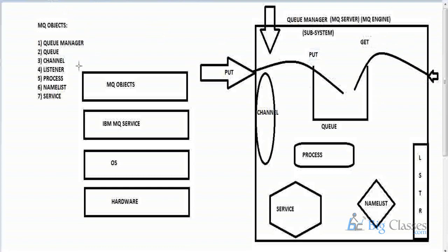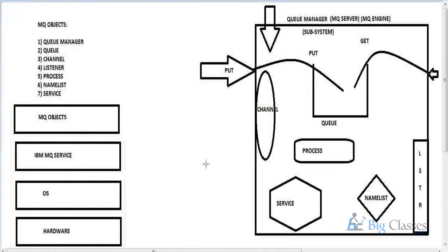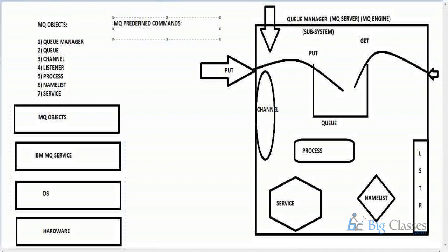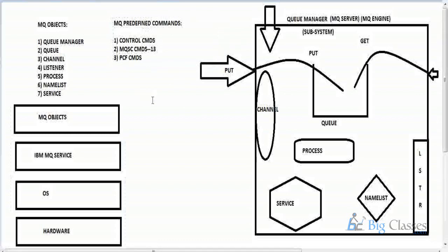To administrate the seven predefined objects, IBM MQ has predefined commands broadly divided into three types: control commands, MQSC commands (MQ Script Commands), and PCF commands (Programmable Command Format). MQSC commands are only 13 and they are constant. To administrate MQ objects, you must use MQSC commands. The instructor demonstrated listing valid MQSC commands at the IBM MQ server console.